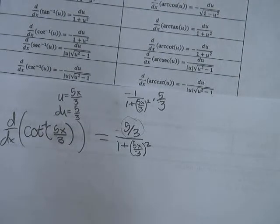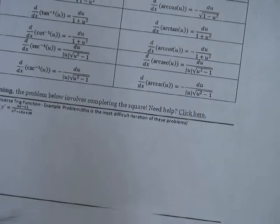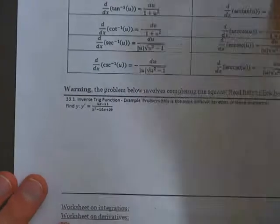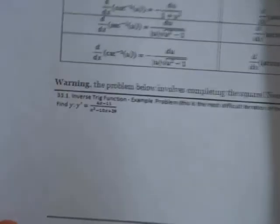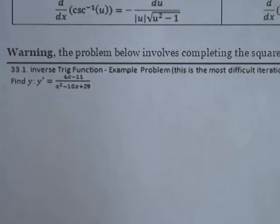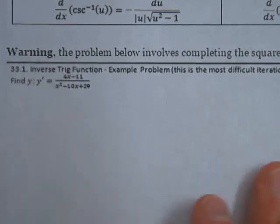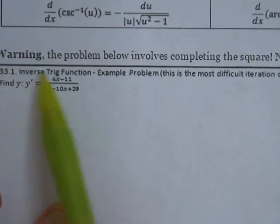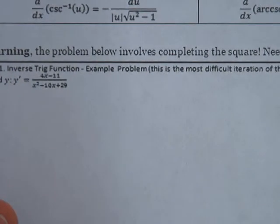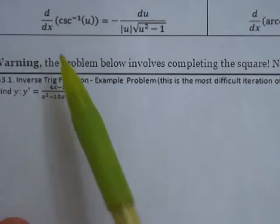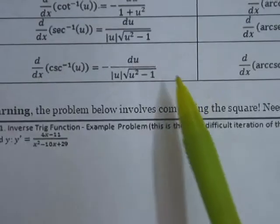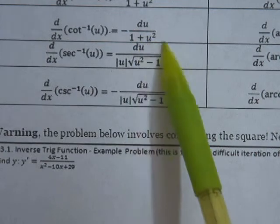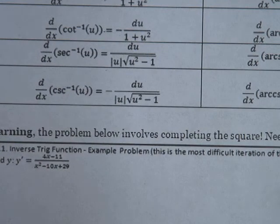Now we're gonna go look at an integral style problem, here, that's a little bit more involved. So this problem is the most difficult iteration, and the hint above says, warning, this problem involves completing the square. It involves completing the square because we want to morph this bottom into something that looks like this, with a 1 plus something squared, or a number.